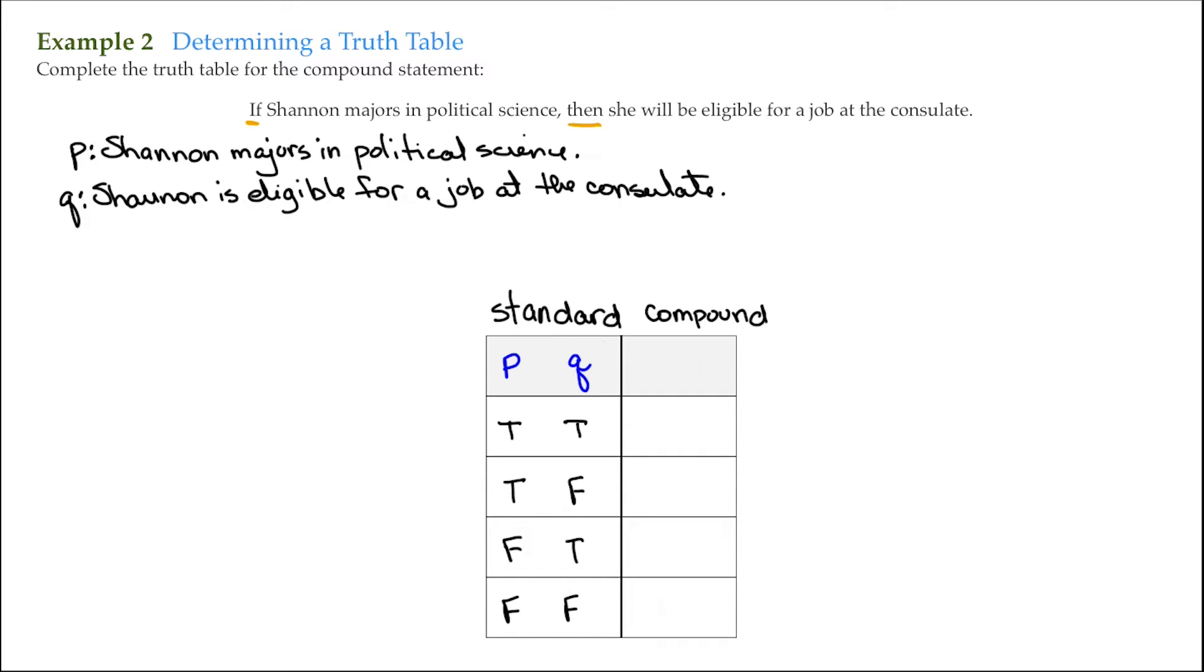But we do know that this is an if-then. So that is going to be written as P, and remember we use that arrow, if P then Q is how that's pronounced.